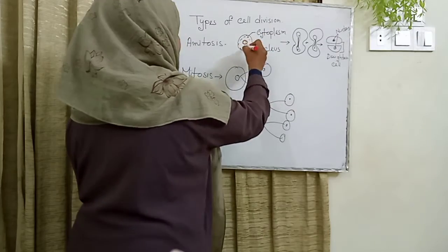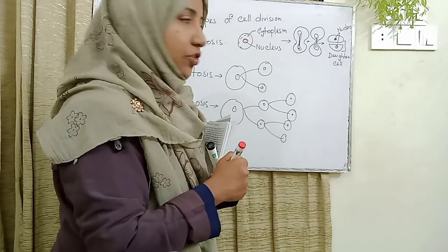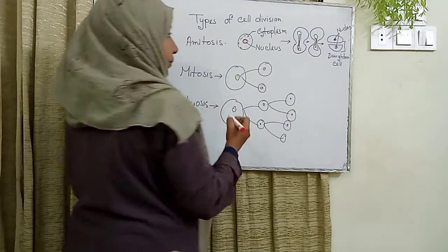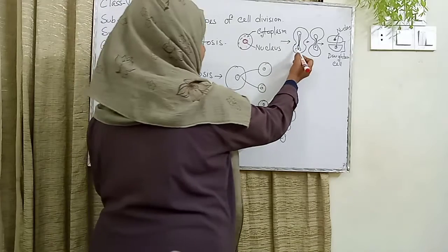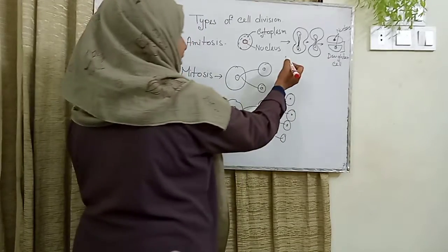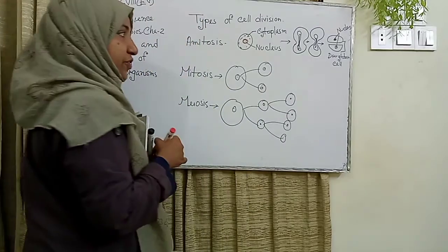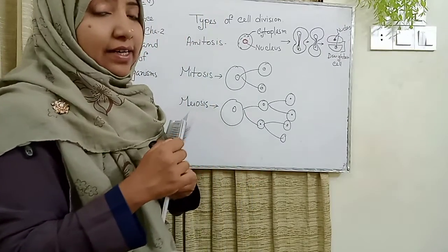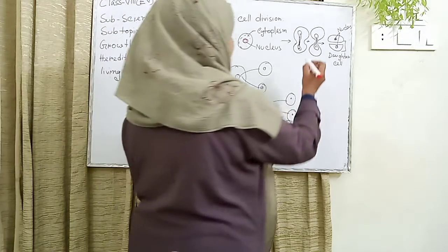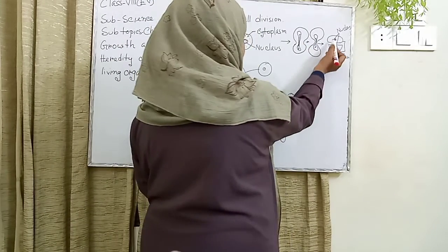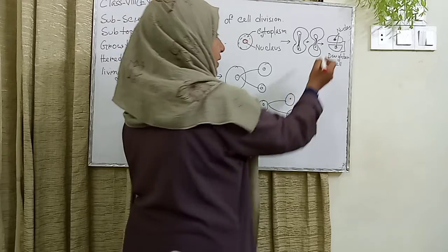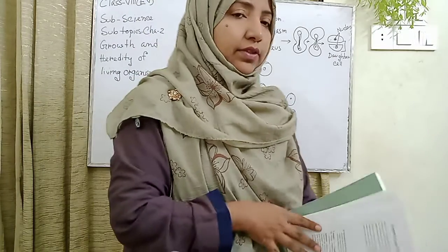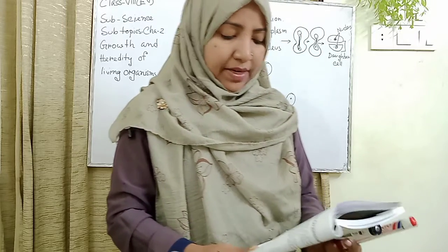The cytoplasm and nucleus both divide together. The nucleus takes on a dumbbell shape and the cytoplasm also forms a dumbbell shape structure. Finally, they separate, and the resulting cells are called daughter cells. So the nucleus divides into two and the cell structure also divides into two.